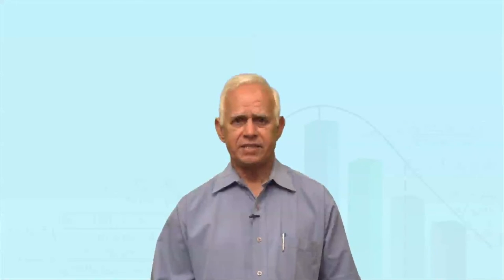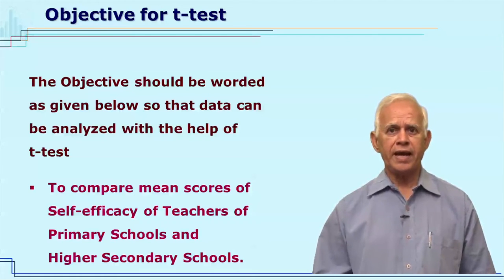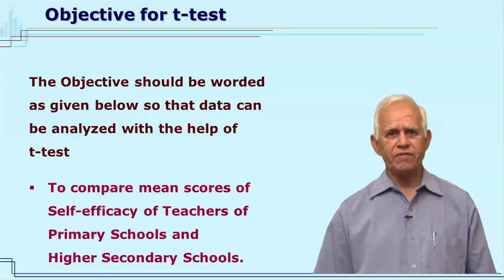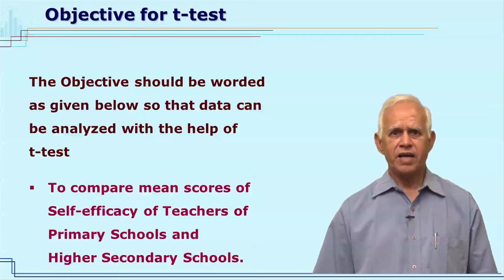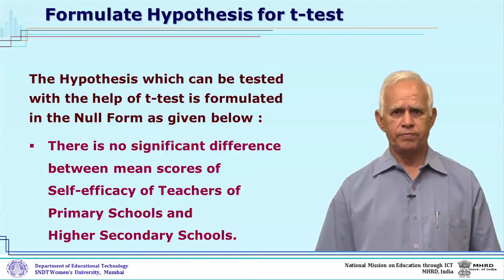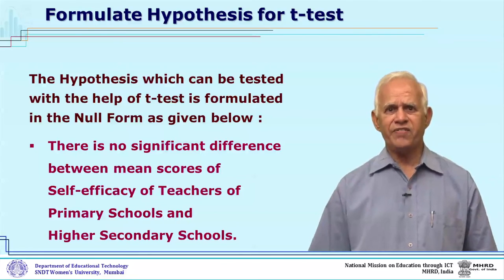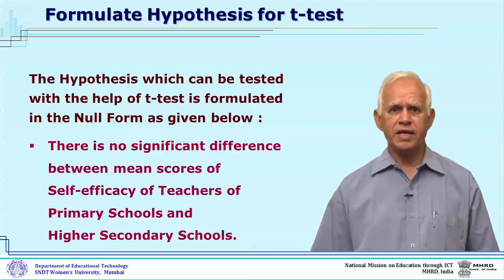Let us take another example to understand how the objectives are to be written, the hypothesis stated, the analysis done, and the interpretation made for the t-test. Suppose the objective is: to compare mean scores of self-efficacy of teachers of primary and higher secondary schools. For this objective, the hypothesis in null form is stated as: there is no significant difference in self-efficacy of teachers of primary and higher secondary schools.